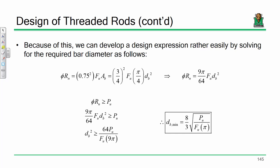I walked through that exercise so that when I present this expression in the slides, it doesn't seem like it came out of nowhere. The phi value is built in, and the 0.75 Fu is built in — so it's really just a nice plug-and-chug expression.